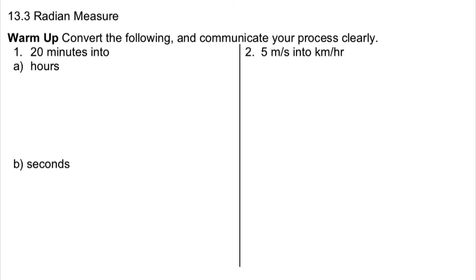Hi there. Today we're going to take a look at something called radian measure. This is a new way of measuring angles, and we will see why we need it and how it's related to our typical way of measuring angles, which is degrees or perhaps revolutions of a circle.